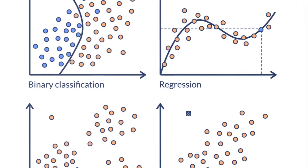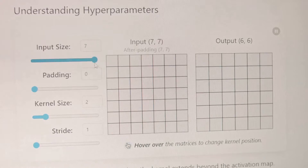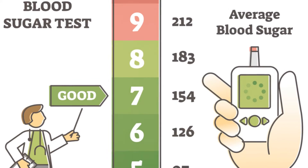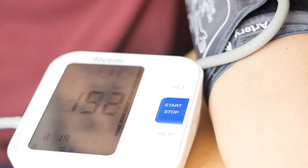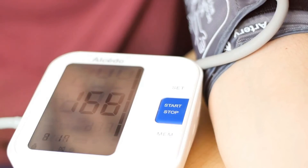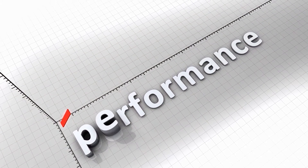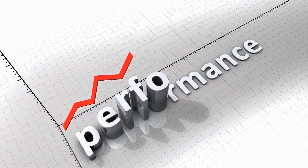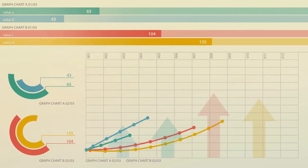Youden's Index ensures we don't overlook one aspect in favor of the other. It finds its use in diverse fields, from medical diagnostics to machine learning models. In medical testing, Youden's Index helps determine the optimal cutoff point for tests like blood pressure or glucose level to distinguish between healthy and diseased individuals. In machine learning, it helps evaluate the performance of classification models, providing a measure that's more comprehensive than accuracy.